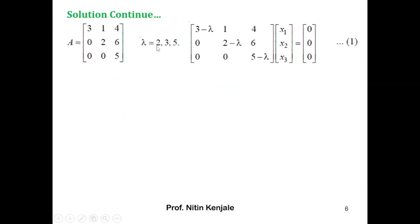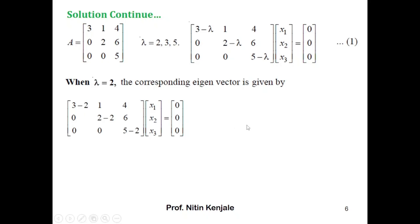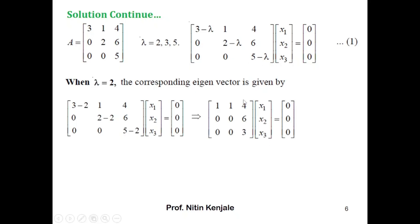We will substitute values of λ one by one to solve for eigenvector x. When λ = 2, equation 1 becomes: the diagonal entries reduce to 1, 0, and 3. We get a system where, since we cannot eliminate any row using row transformations, we apply Cramer's rule. Choosing the first two equations: x1 + x2 + 4x3 = 0 and 0x1 + 0x2 + 6x3 = 0.